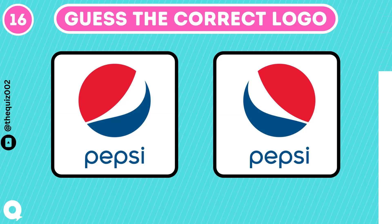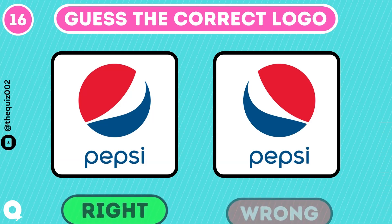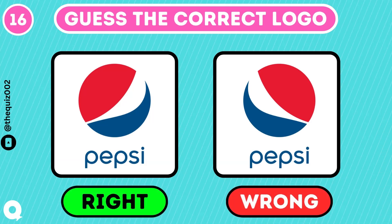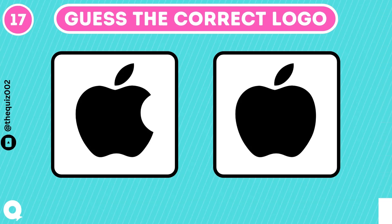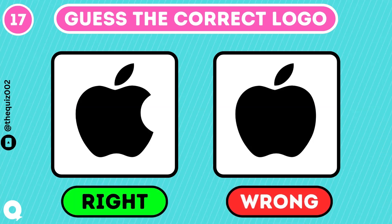The Google smartphone logo has an arrow pointing to the right. Can you guess the real Apple logo? The real Apple logo has a bite.